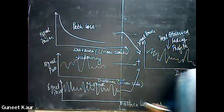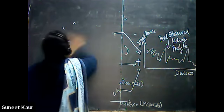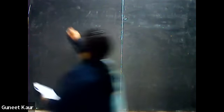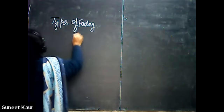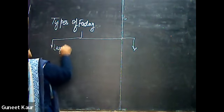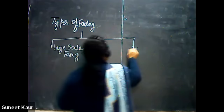Now come to the various types of fading. Fading is further classified into two parts: first is large-scale fading, and second is small-scale fading. Large-scale fading is due to path loss and shadowing effect, as already discussed. Small-scale fading is further divided into two parts based on multipath delay spread and Doppler spread.